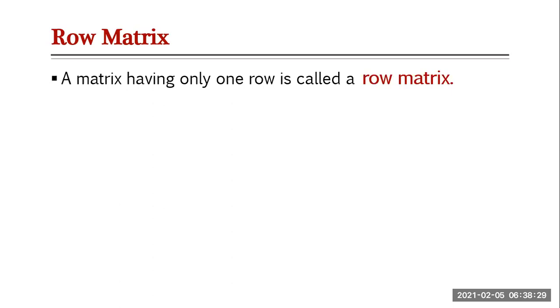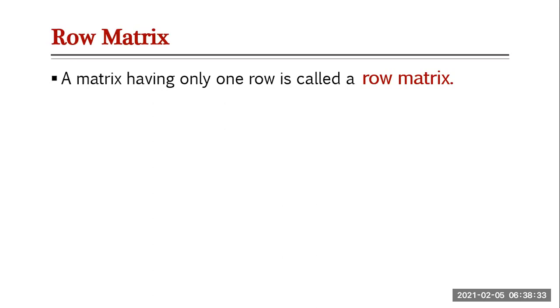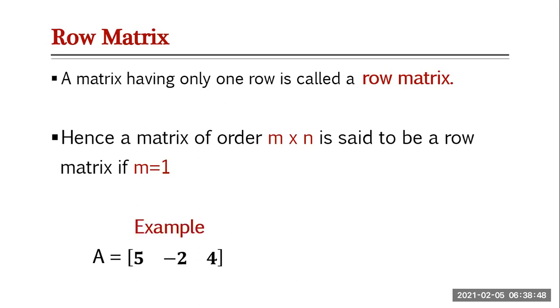A matrix having only one row is called a row matrix. Hence a matrix of order m by n is said to be a row matrix if m is equal to one. For example, matrix A = [5, -2, 4] is a row matrix because it has only one row.